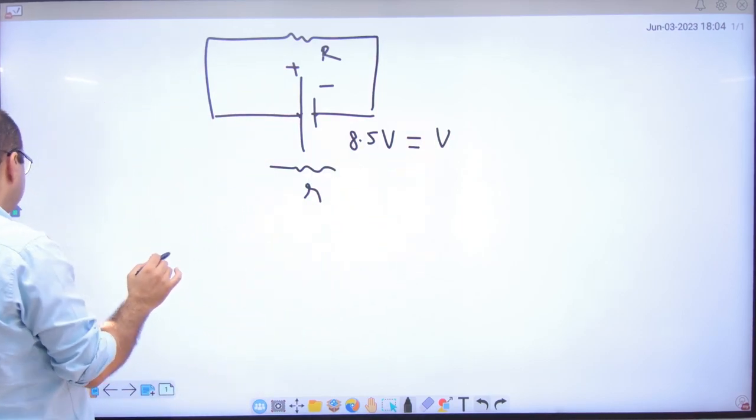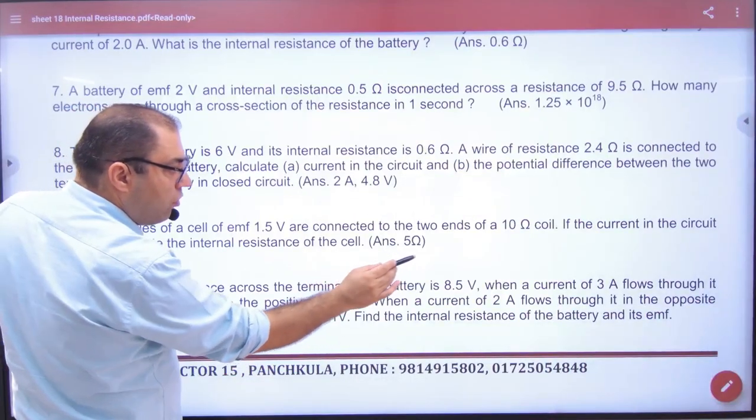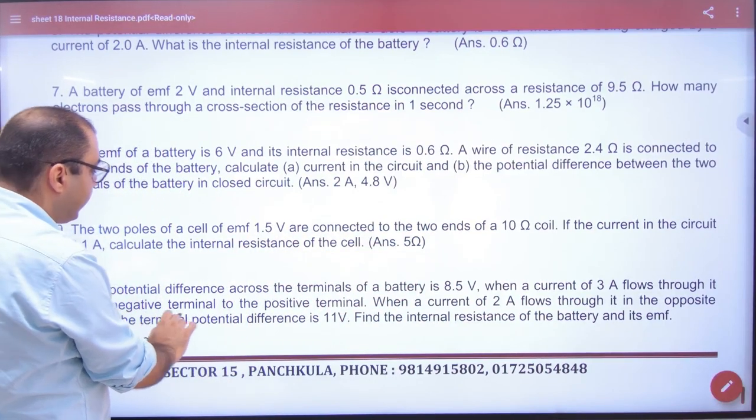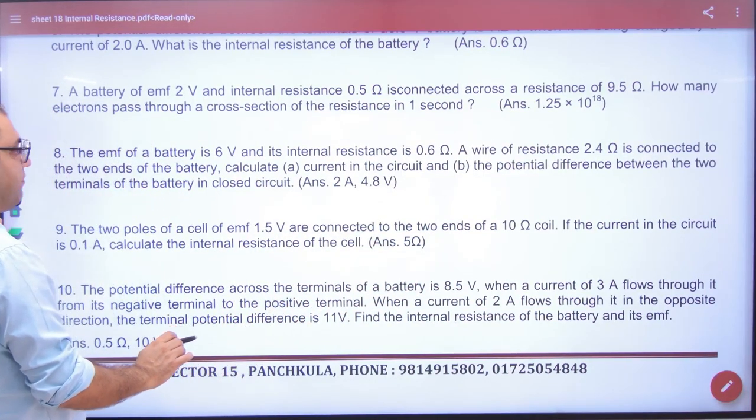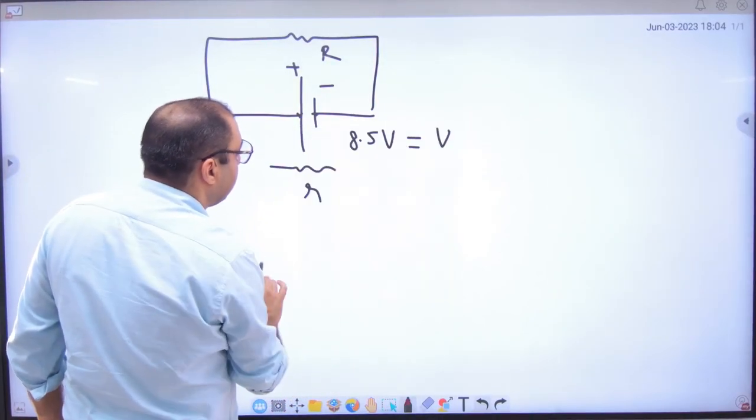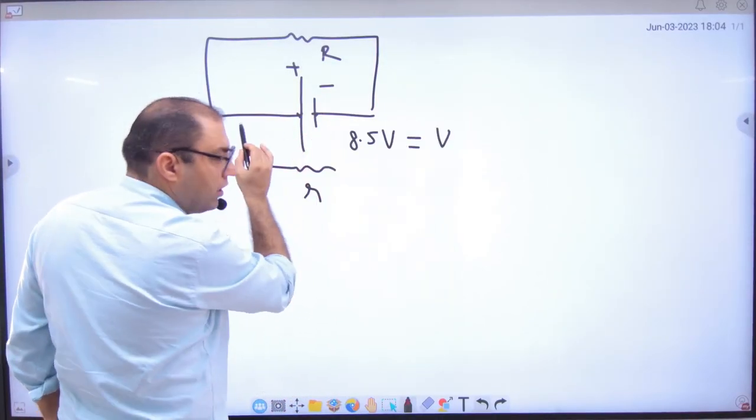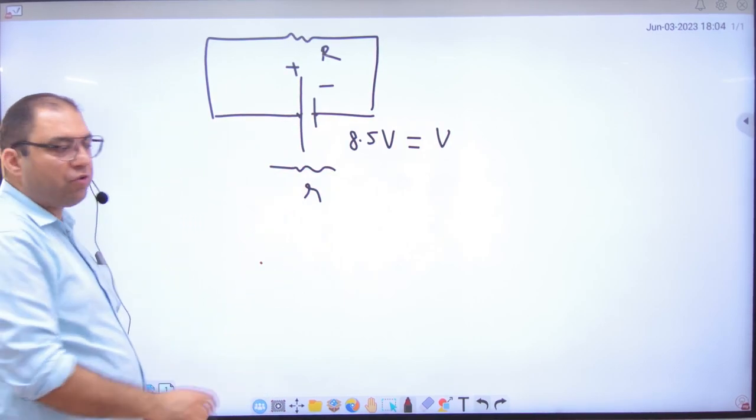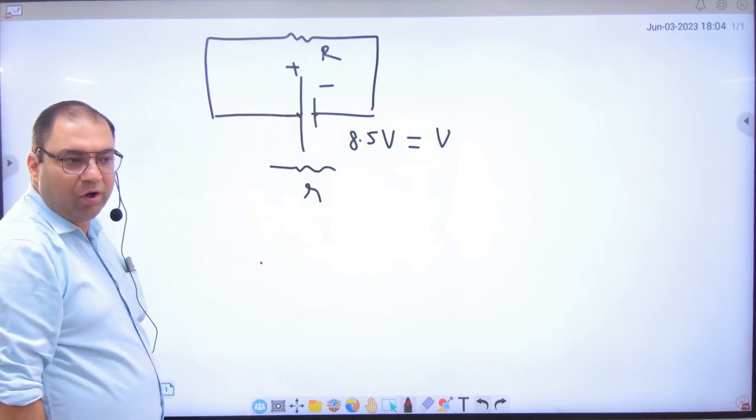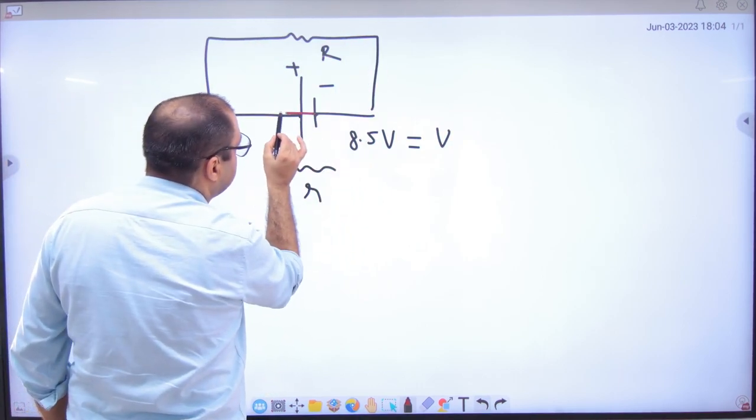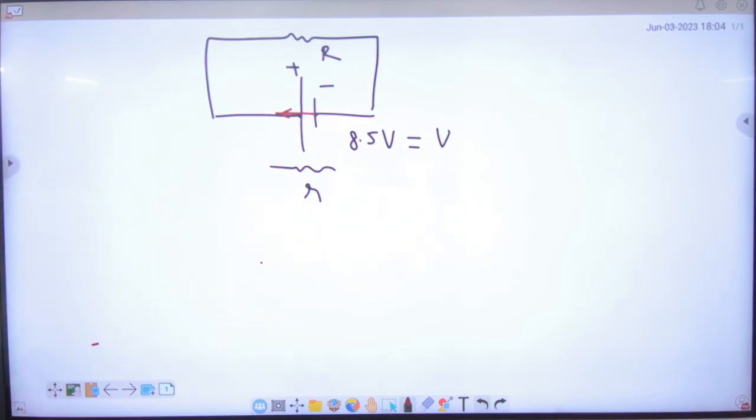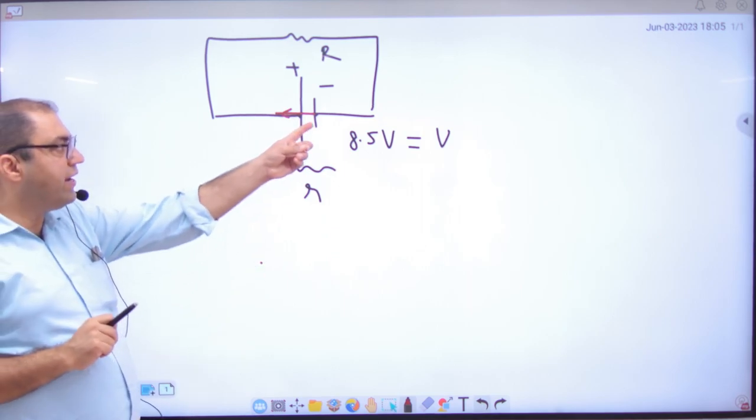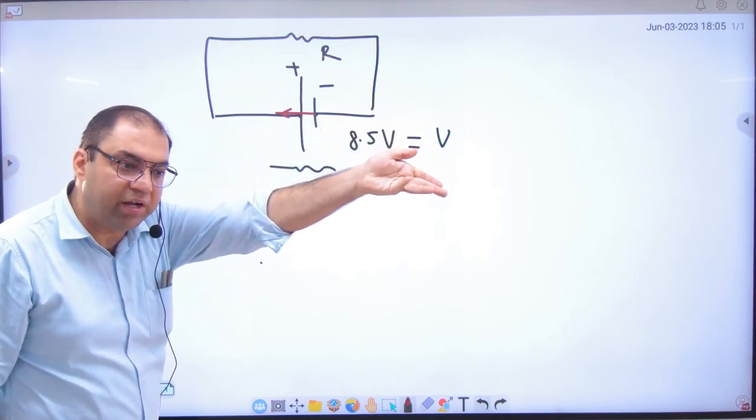When the current of 3A is moving, it flows from the negative terminal to the positive terminal. So your current is going from negative to positive. Now there are two interpretations. The current is going negative to positive in external resistance.